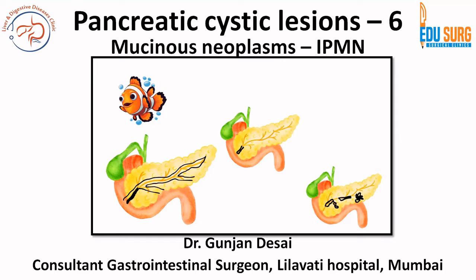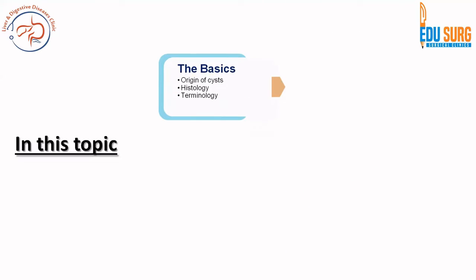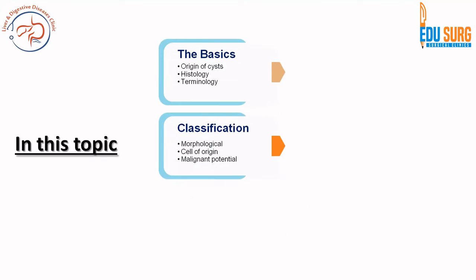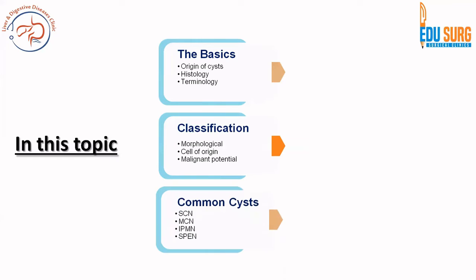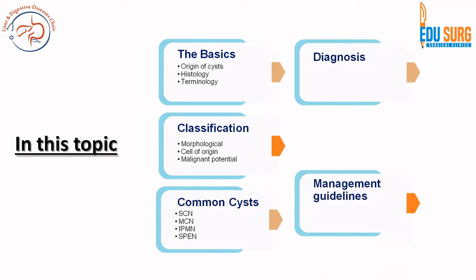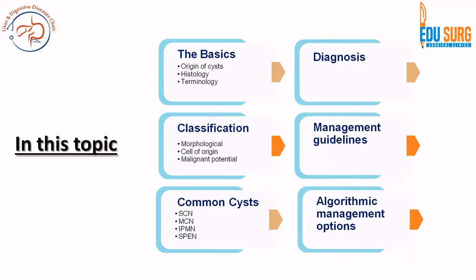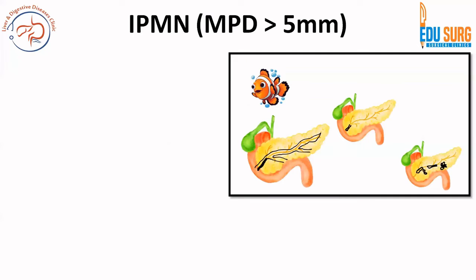This slide we have already seen — it shows you the different types of IPMN. In this topic, we have already seen the basics. This is the sixth part of this series, covering terminology, the morphological classification, malignant potential, how to diagnose them, and some of the guidelines-related points.